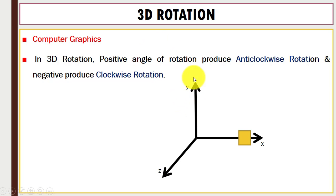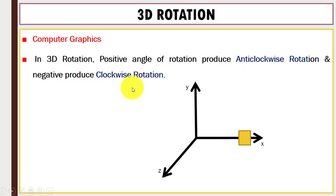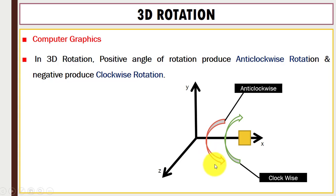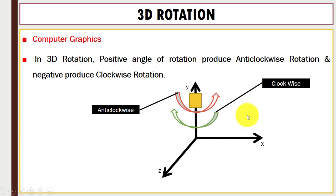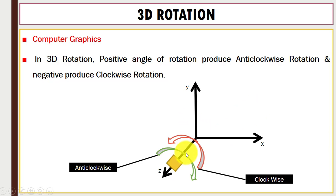In 3D rotation there are two types of rotation: clockwise and anticlockwise. Along the x-axis, if the angle is positive then the rotation is anticlockwise; if the angle is negative then the rotation is clockwise. Similarly, along the y-axis we have anticlockwise and clockwise directions, and along the z-axis as well.